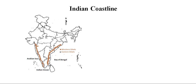Indian coastline is a very important topic by which we can effectively understand the concept of Indian monsoon — specifically summer monsoon or southwestern monsoon — because Indian coastline and Indian monsoon are interrelated with each other. So in this video we will learn about the concept of coast.